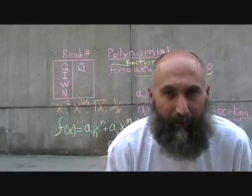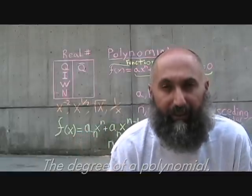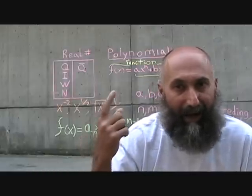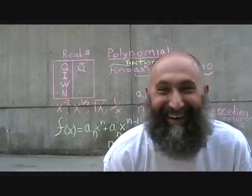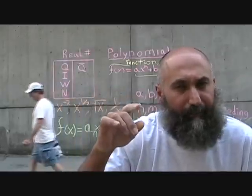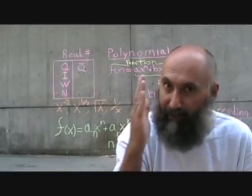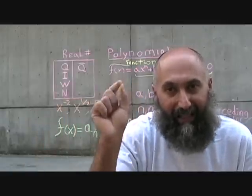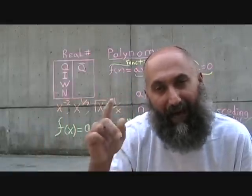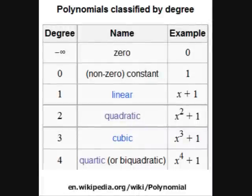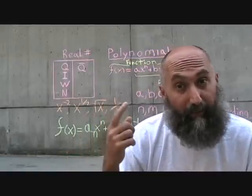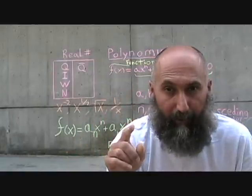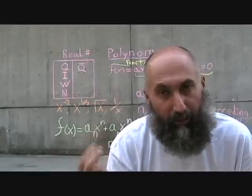There is another term: the degree of a polynomial, or the degree of an equation. The degree refers to the highest power in the function. So if you had f of x equal to x cubed plus 2x squared, the highest power is written first because they're in descending order, and that decides the degree. An x cubed as the highest power makes it a third-degree function; x to the eighth makes it an eighth-degree polynomial.